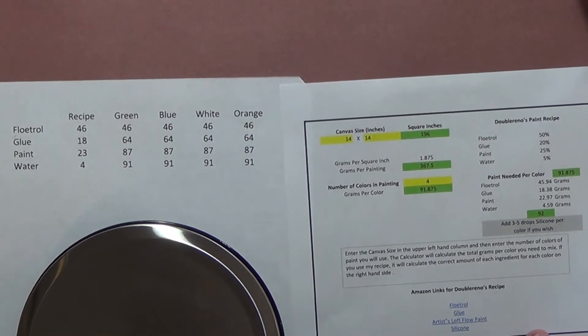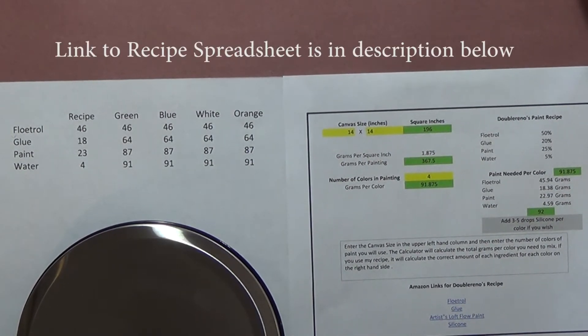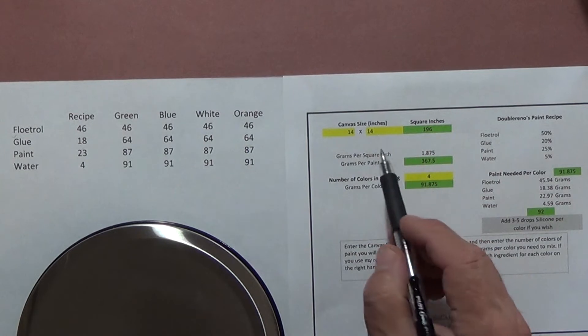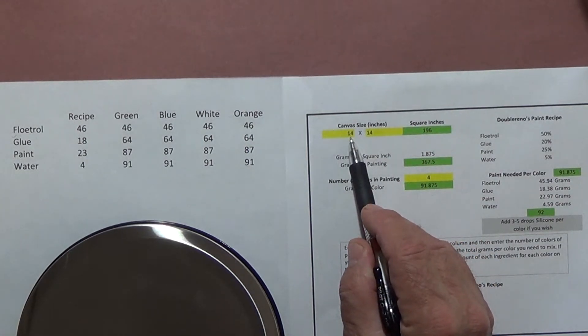I've got a copy of this spreadsheet in my Facebook group, it's Pour Painting by Double Reno Group. If you just search that or you can look down in the description, there will be a link to it.